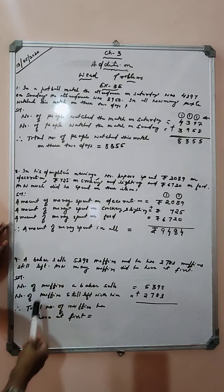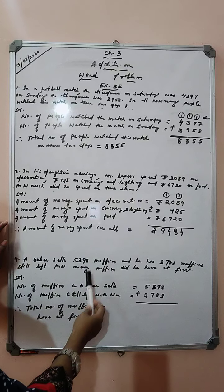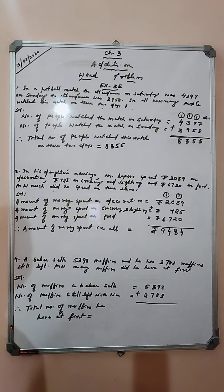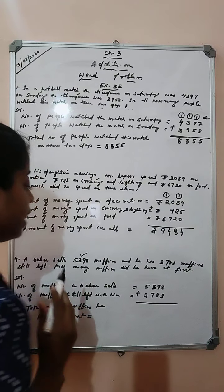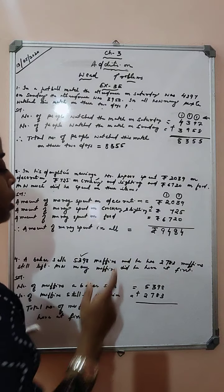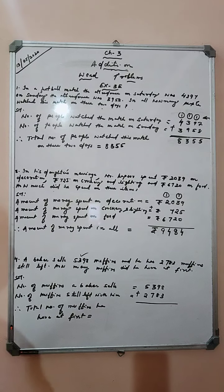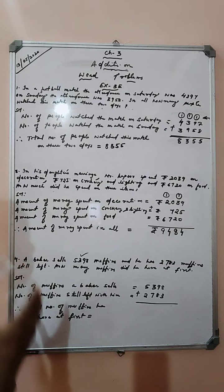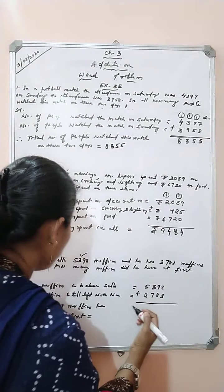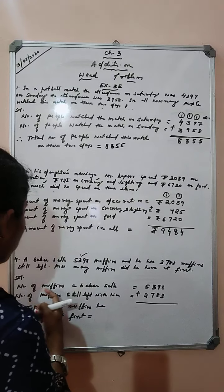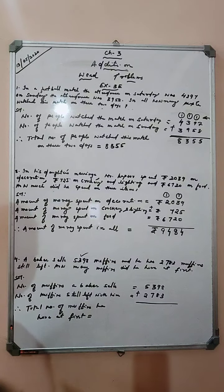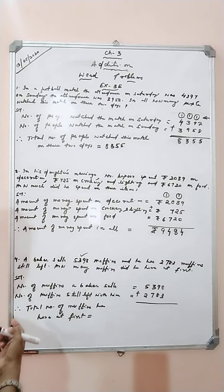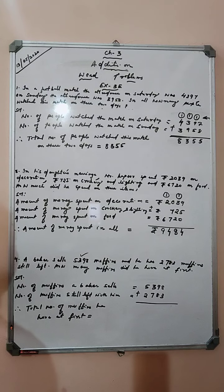Next question: a baker sells 5,319 muffins and he has 2,783 muffins still left. How many muffins did he have at first? The baker sold 5,398 muffins, and after selling, 2,783 are still left with him. So, how many muffins were there in the beginning? We need to add these two numbers. The statement: number of muffins the baker sold is 5,398; number of muffins still left is 2,783. Therefore, total number of muffins he had at first.